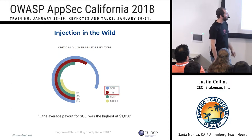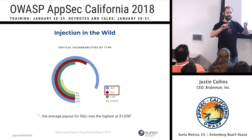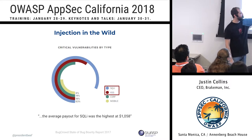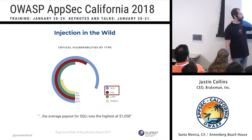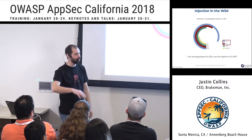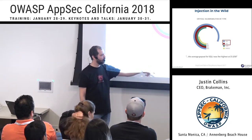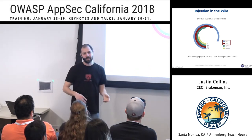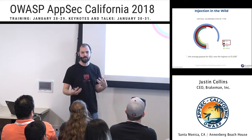Looking at the Bugcrowd 2017 report, these are critical P1 vulnerabilities — and 63% of them were SQL injection. So while it's not very common, when it happens it's bad. Cross-site scripting is number two at 18%. SQL injection also got the highest average payout, a little over a thousand dollars. It's not super common but when it happens it's bad, and I think that reaffirms most of our intuition about it.